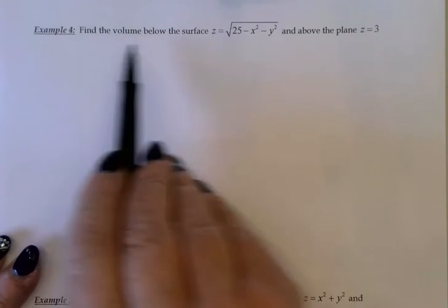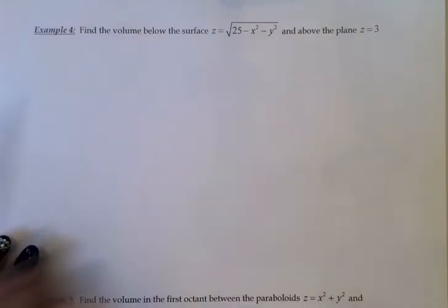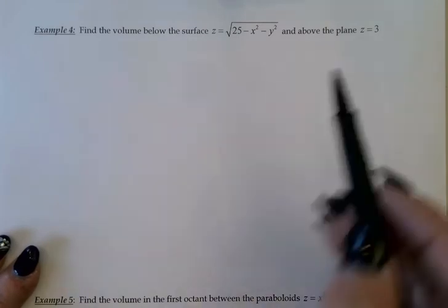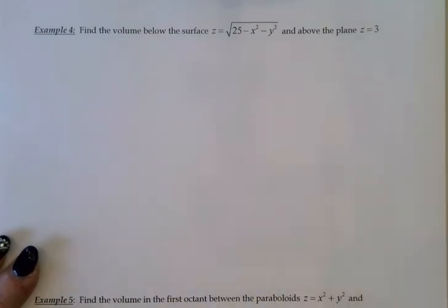In example 4, we'd like to find the volume below the surface z equals the square root of 25 minus x squared minus y squared, and then also above the plane z equals 3.